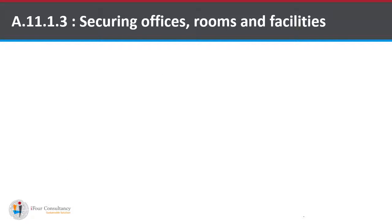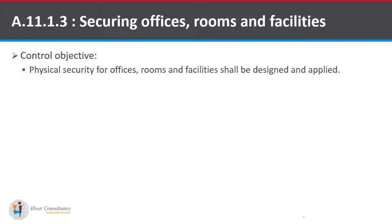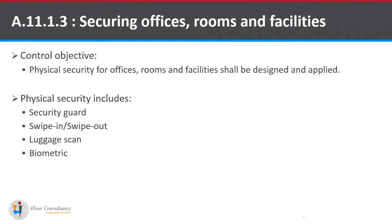The third sub-control is A.11.1.3, Securing Offices, Rooms and Facilities. The control objective is that physical security for offices, rooms and facilities shall be designed and applied. This includes a Security Guard at the entry point of every room, all employees swiping their card when entering and exiting the organization to prevent unauthorized access, luggage scanning, and biometric for two-factor authentication.